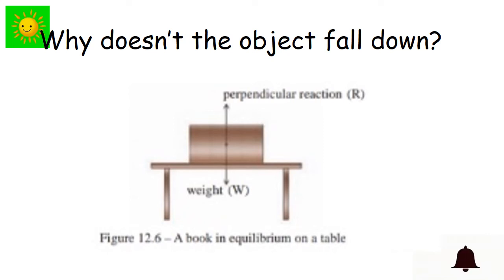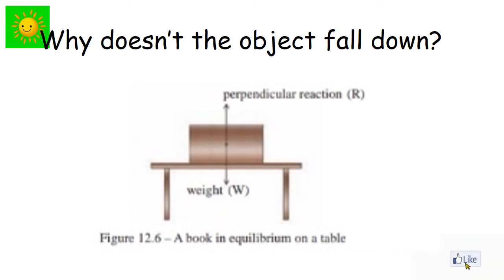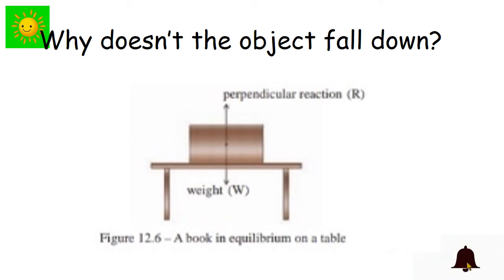Consider an object placed on a table. Why doesn't the object fall down? The weight of the object acts vertically downwards and is balanced by the perpendicular reaction force exerted vertically upward by the table. The object is in equilibrium under the action of these two forces and remains at rest.